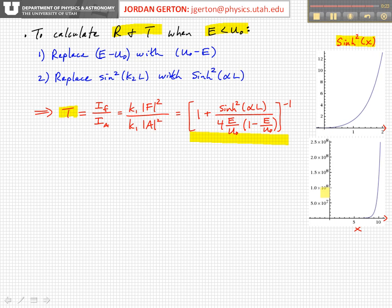Look at this, this is 5×10⁷, this is 2.5×10⁸, compared to the numbers that exist between zero and two. So it gets big very fast once you get, once x is greater than one, or once αL in our case is greater than one, it diverges very, very fast.